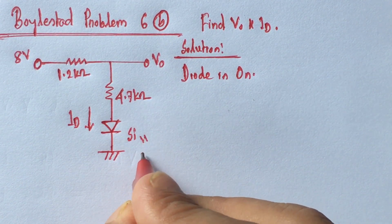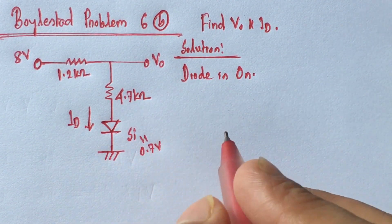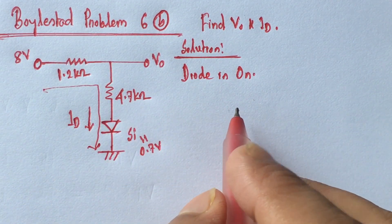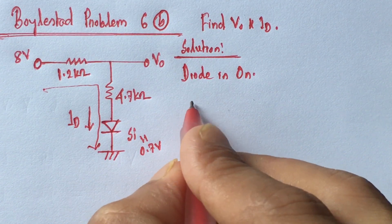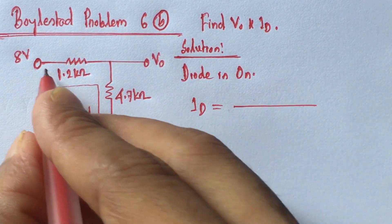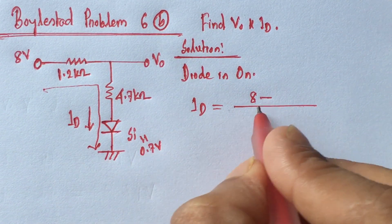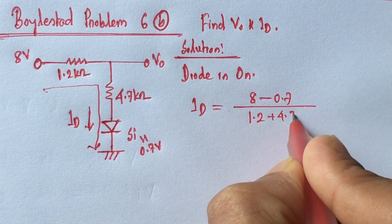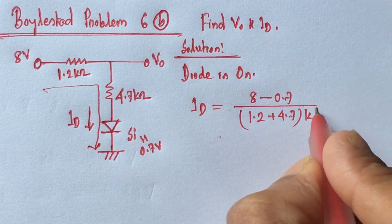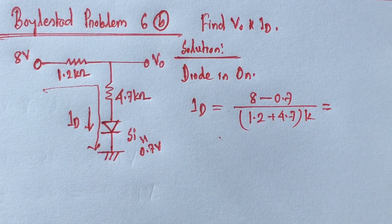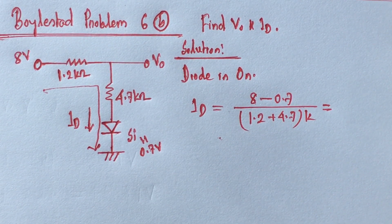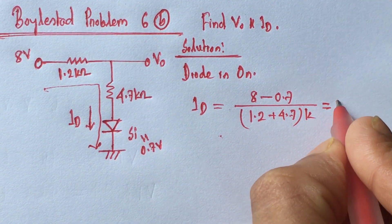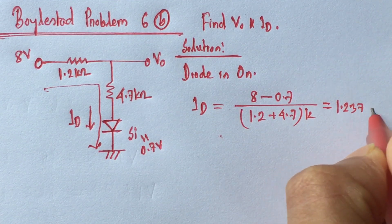Voltage drop of a silicon diode is 0.7 volts, which is fixed. So the current ID will flow throughout the circuit. Now, if we find out the current ID, it will be 8 minus 0.7 volts divided by 1.2 plus 4.7k ohms, which equals 1.237 milliamperes.